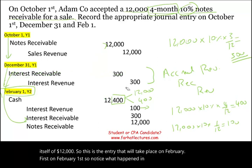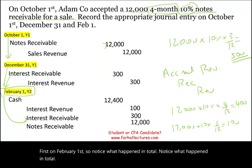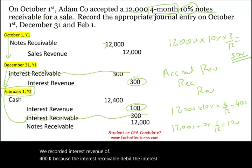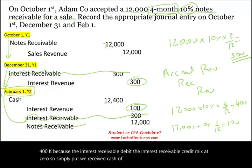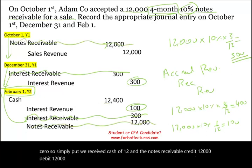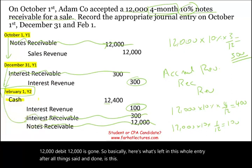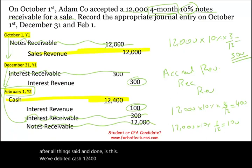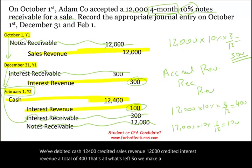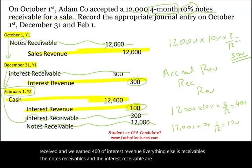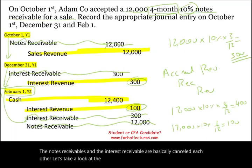In total, we recorded $400 of interest revenue: $300 in year one and $100 in year two. The interest receivable debits and credits cancel to zero, and the notes receivable is removed by the cash received. So all that remains is: debit cash $12,400, credit sales revenue $12,000, credit interest revenue $400. We made a $12,000 sale and earned $400 of interest revenue. This is an accrual of revenue.